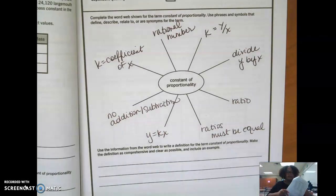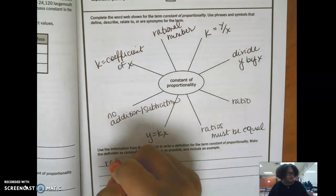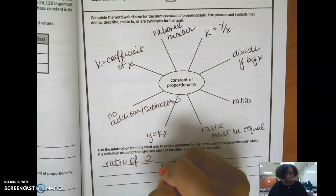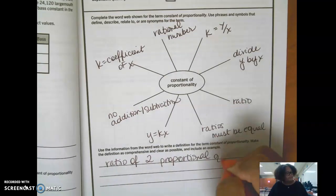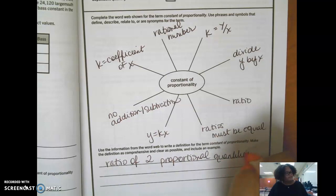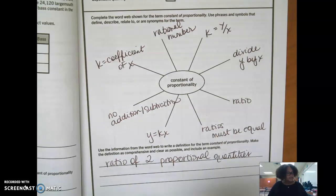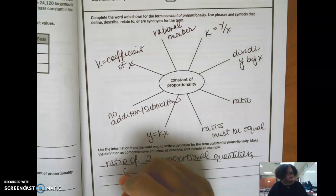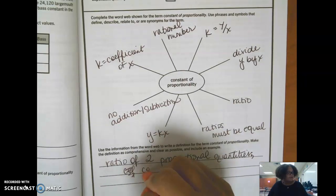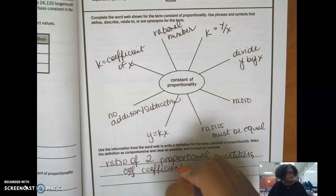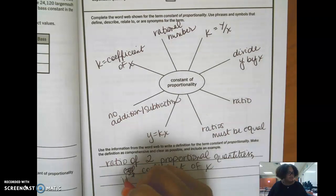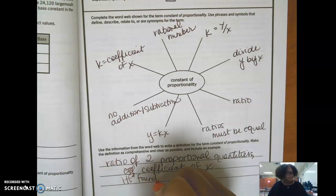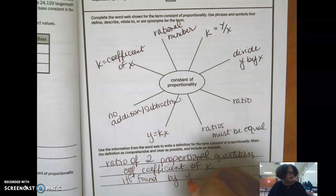So I'm going to take the definition that we got right from our notes last week and it's a ratio of two proportional quantities. And it's a coefficient of x, C-O-E-F-F-I-C-I-E-N-T of x.